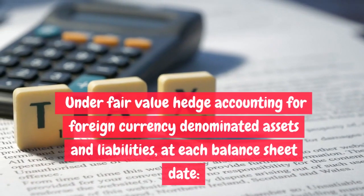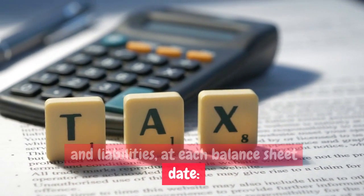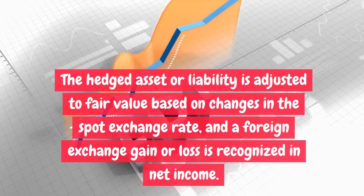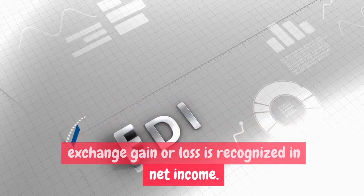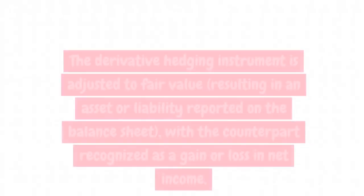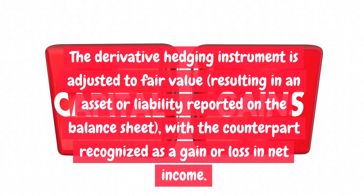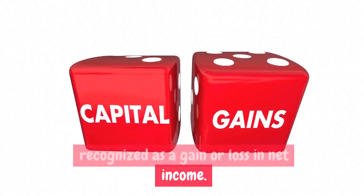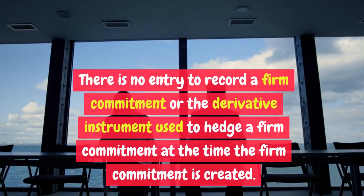If an option is the hedging instrument, under fair value hedge accounting for foreign currency denominated assets and liabilities, at each balance sheet date: the hedged asset or liability is adjusted to fair value based on changes in the spot exchange rate, and a foreign exchange gain or loss is recognized in net income. The derivative hedging instrument is adjusted to fair value, resulting in an asset or liability reported on the balance sheet, with the counterpart recognized as a gain or loss in net income.